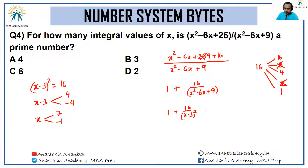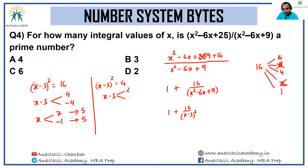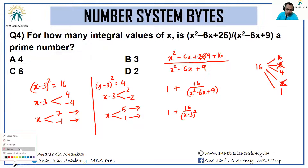When (x − 3)² = 16, the expression equals 1 + 16/16 = 2, which is prime. ✓ For (x − 3)² = 4: x = 5 or x = 1, giving expression value 1 + 16/4 = 1 + 4 = 5, which is prime. ✓